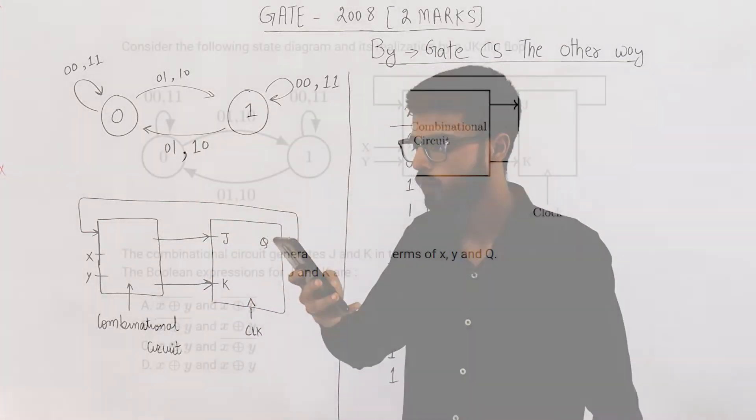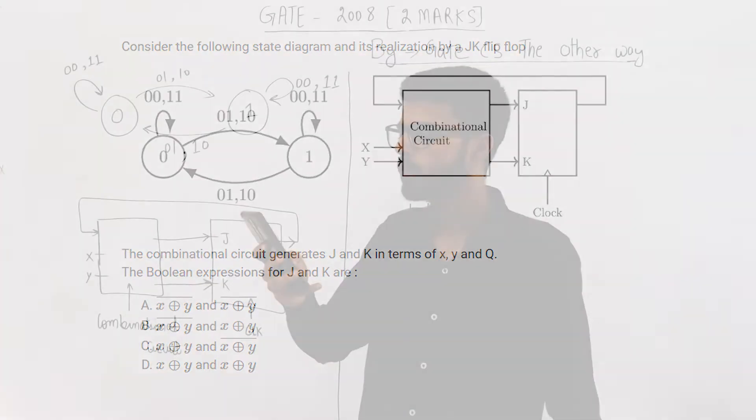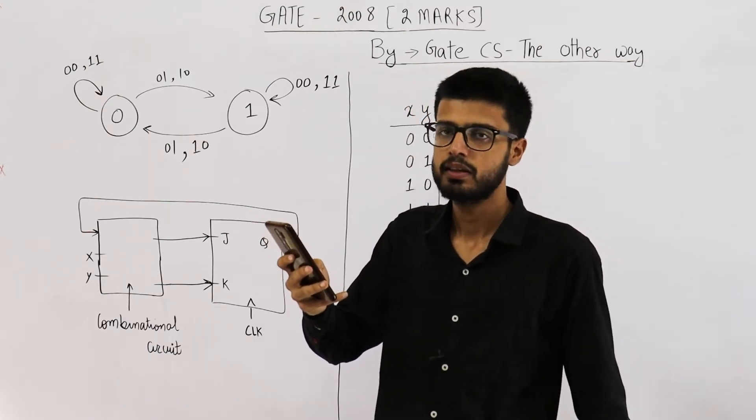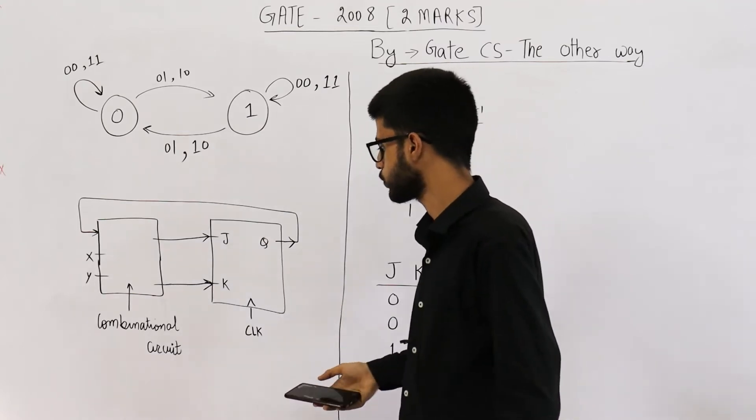It says, consider the following state diagram and its realization by JK flip-flop. The combinational circuit generates J and K in terms of X, Y and Q. The Boolean expression for J and K are. Now, you have a look at these options. You can see J and K are only dependent on X and Y, they are not dependent on Q. So let's start this question.